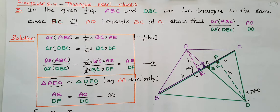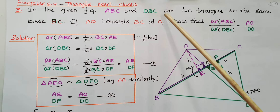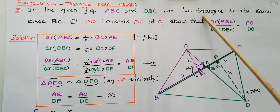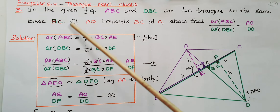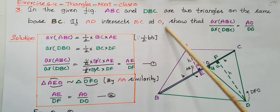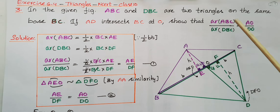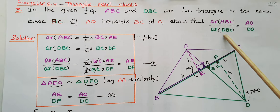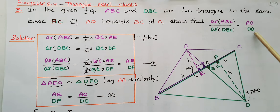Hello everyone, today I am going to tell the solution of the third problem from Exercise 6.4 from the Triangles chapter from NCERT Class 10. If this problem comes in the form of MCQ, the given figure shows triangles ABC and DBC are two triangles on the same base BC. If AD intersects BC at O, show that area of ABC by area of DBC is equal to AO by DO.